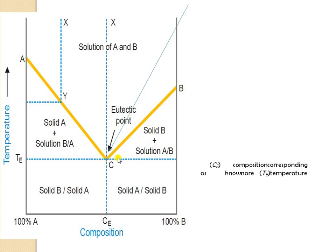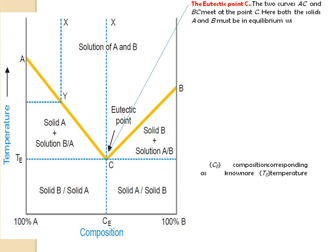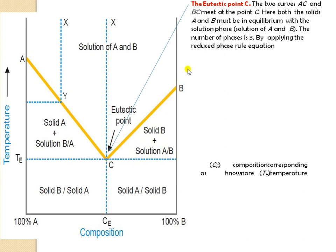The point of intersection of curves AC and CB is known as the eutectic point. The two curves AC and BC intersect at point C, where both solid A and solid B must be in equilibrium with the solution phase. Along line BC, solid B and solution of A in B exist. Along line AC, solid A and solution of B in A exist. At the eutectic point, solid A, solid B, and solution of both components are all present simultaneously.